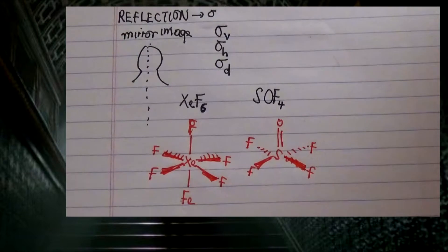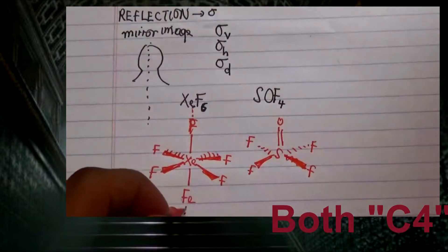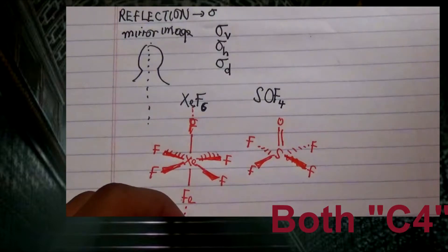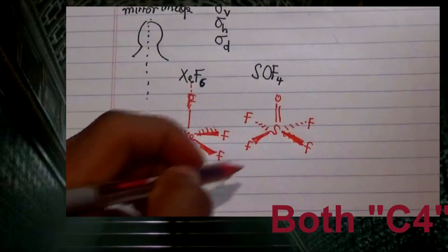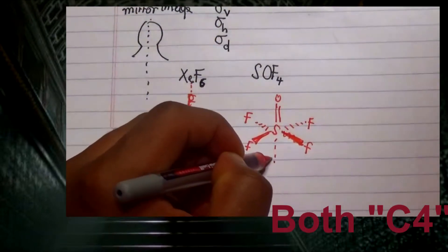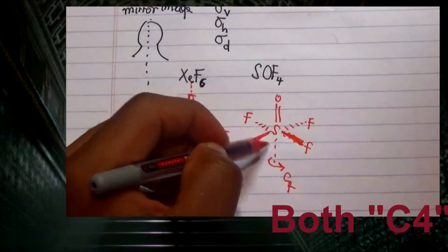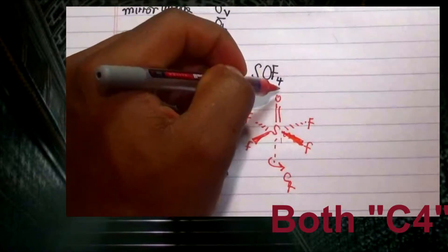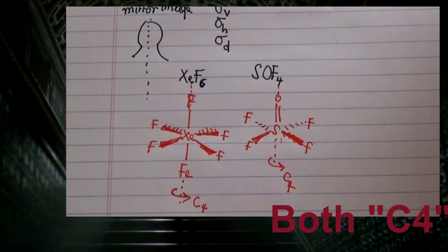In xenon fluoride, the axis of rotation passes through the axial fluorine atoms. Rotating 90 degrees gives the same structure — this is a C4 rotation. Similarly, sulfuryl fluoride also has a C4 rotation where rotating 90 degrees still gives the same structure passing through the principal axis.